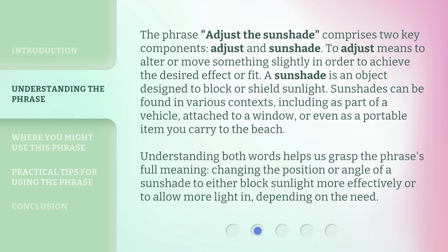The phrase 'adjust the sunshade' comprises two key components: adjust and sunshade. To adjust means to alter or move something slightly in order to achieve the desired effect or fit. A sunshade is an object designed to block or shield sunlight. Sunshades can be found in various contexts, including as part of a vehicle, attached to a window, or even as a portable item you carry to the beach. Understanding both words helps us grasp the phrase's full meaning: changing the position or angle of a sunshade to either block sunlight more effectively or to allow more light in, depending on the need.